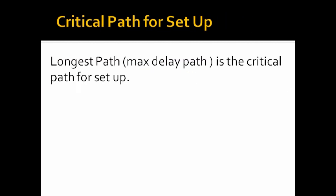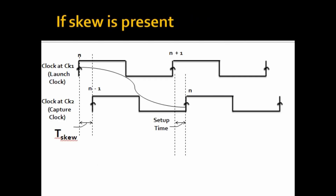So the worst or critical path for setup will be the path with maximum delay. Because if it is the longest path with the maximum delay, it has more chances of being late, and if it is late there will be a setup violation because the data would not get enough time to reach node W. Till now we have considered the clock is ideal with zero skew and zero transition.